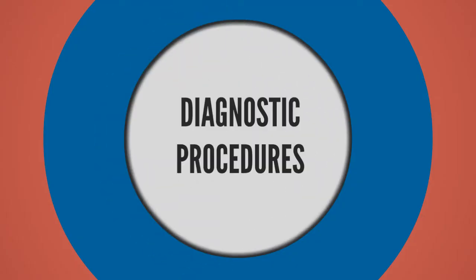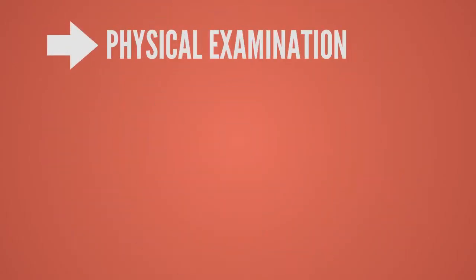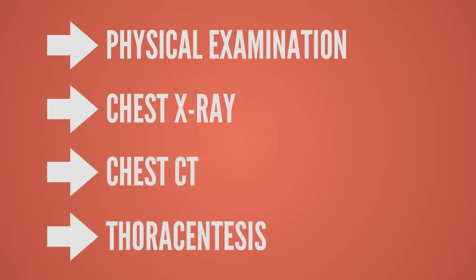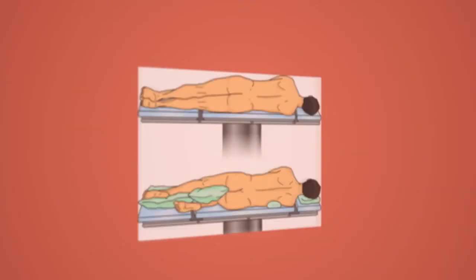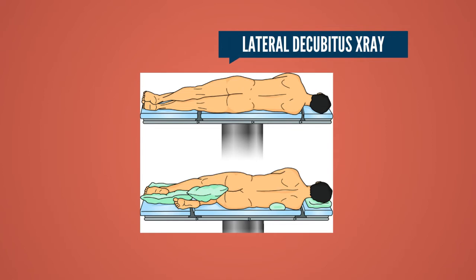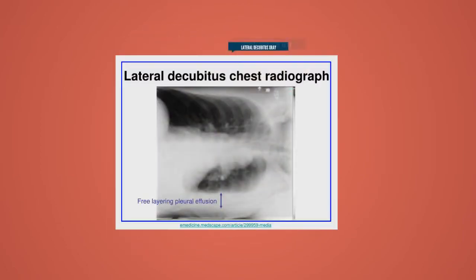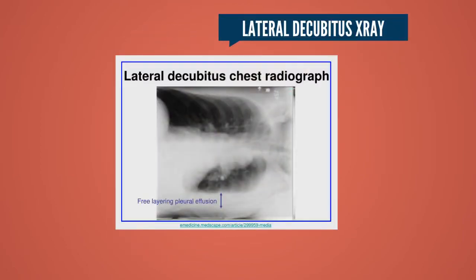Some diagnostic procedures include physical examination, chest x-ray, chest CT, and thoracentesis, which confirms the presence of fluid. In some instances, a lateral decubitus x-ray is obtained. For this x-ray, the patient lies on the affected side in a side-lying position. This position creates a visible fine line separating the air and the fluid in the image.